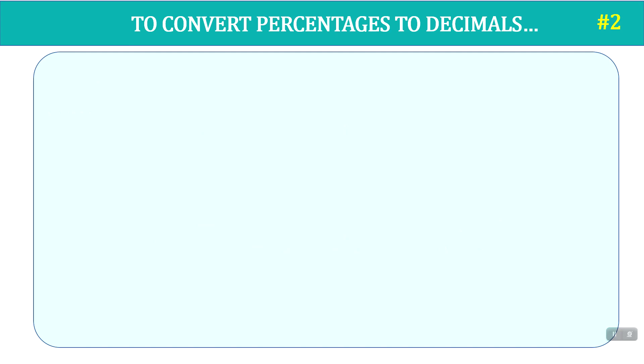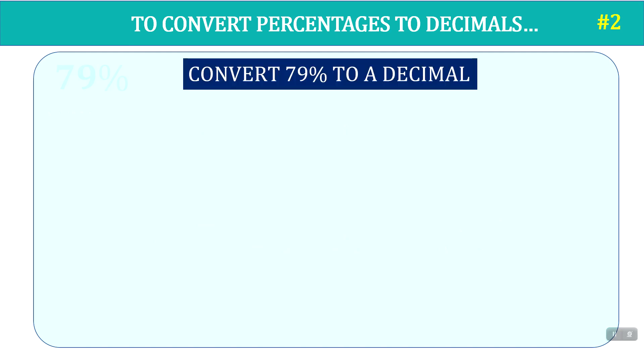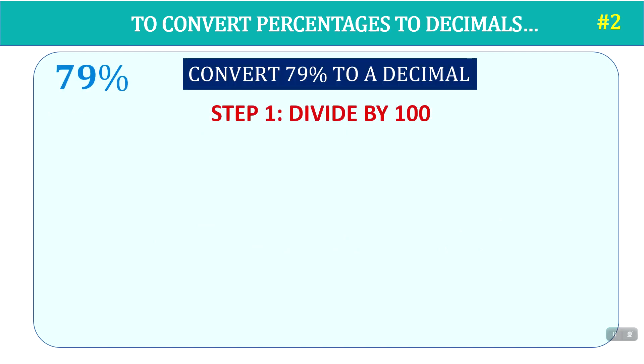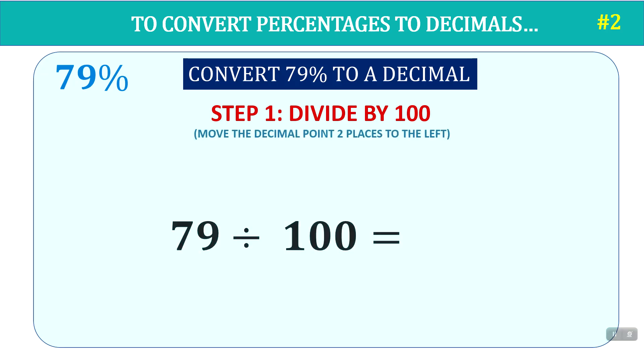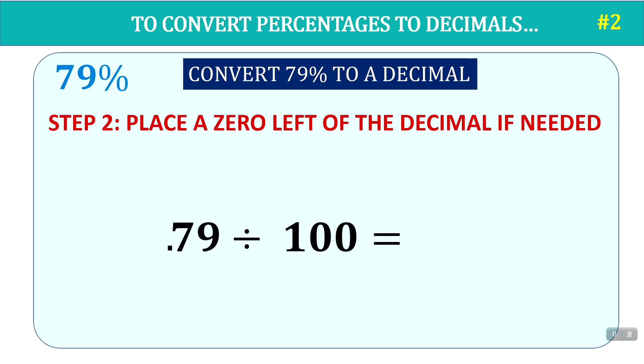Question two: let's convert 79 percent to a decimal. Step one, we divide by 100 — instead of long division, we move the decimal point two places to the left. One, two — there's the decimal point. Step two, we put a zero in its place. The answer is 0.79. 79 percent as a decimal is 0.79.